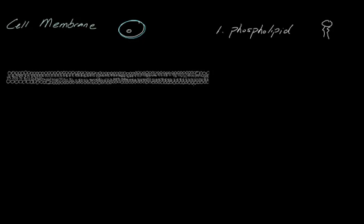We're looking at this membrane as a kind of cross-section — you can imagine that we cut the membrane in half. What we have here is actually what we call our phospholipid bilayer, and sometimes it's also called the lipid bilayer.